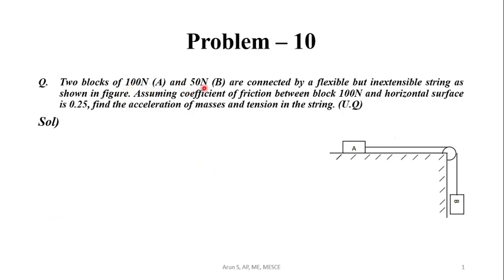Two blocks of 100 N and 50 N are connected by a flexible but inextensible string as shown in figure. Assuming coefficient of friction between block 100 N and horizontal surface is 0.25, find the acceleration of masses and tension in the string. This is the figure given.